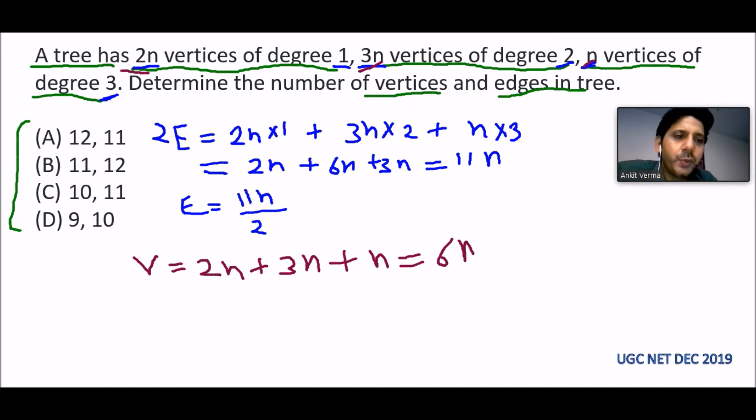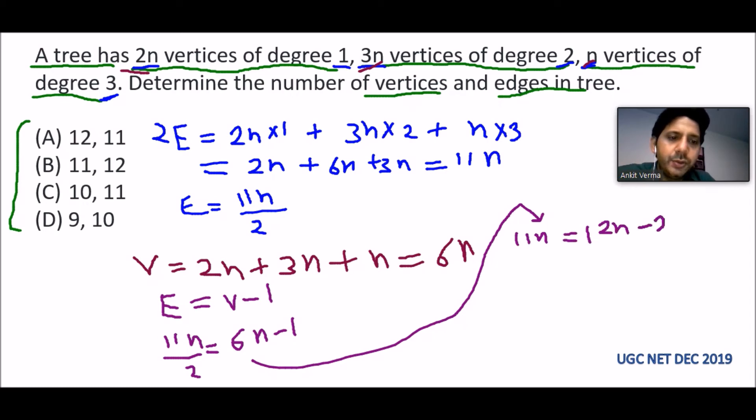Now we put everything into the formula. The formula is number of edges equals vertices minus 1. So edges are 11n by 2 equals vertices, which is 6n minus 1. Solving, it becomes 11n equals 12n minus 2. So n equals 2.